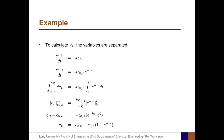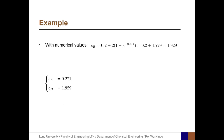We can now calculate C_B. Starting with the design equation, we insert the full expression for C_A into the right-hand side, separate variables with boundaries, evaluate the primitive function, and obtain the final expression: C_B equals the initial concentration of B plus the initial concentration of A times (1 minus e to the negative K·t). With numerical values, C_B is 1.929. After four minutes of reaction time, the concentrations are C_A equals 0.271 and C_B equals 1.929. Adding these gives 2.2, which is logical since that equals the sum of the initial concentrations and there was no change in the total number of moles in the reaction.